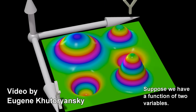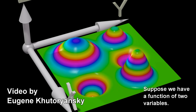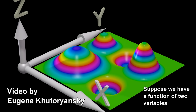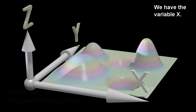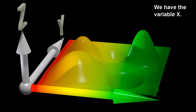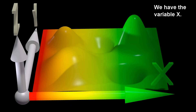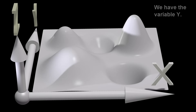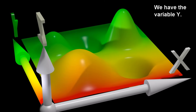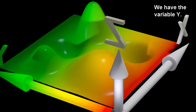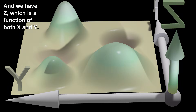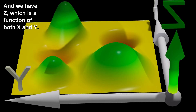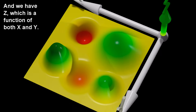Suppose we have a function of two variables. We have the variable x, we have the variable y, and we have z, which is a function of both x and y.